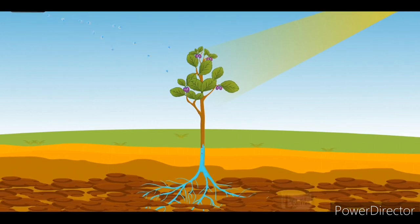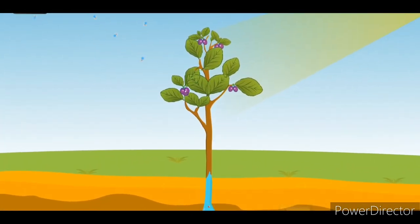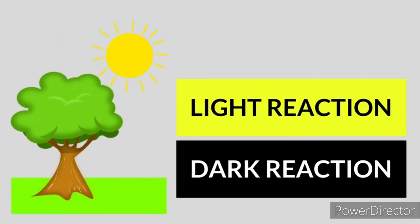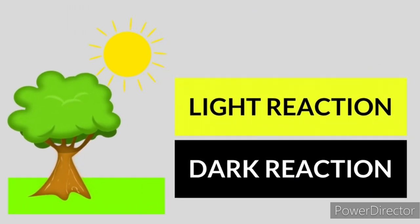This transforms the water into oxygen and the carbon dioxide into glucose. But let's focus on the differences of light reaction and dark reaction of photosynthesis.